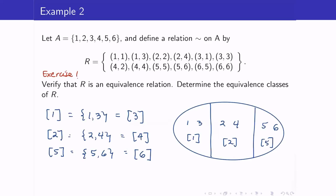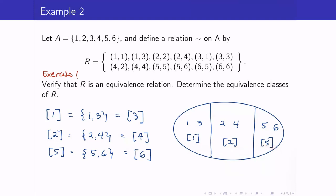How about this example? In our previous video lecture, we saw that the set of equivalence classes would be the set containing the equivalence class of 1, the equivalence class of 2, and the equivalence class of 5. Therefore, a transversal could be T = {1, 2, 5}. Or we can have another transversal T′ = {3, 4, 6}. Again, I am just taking one representative from each equivalence class.